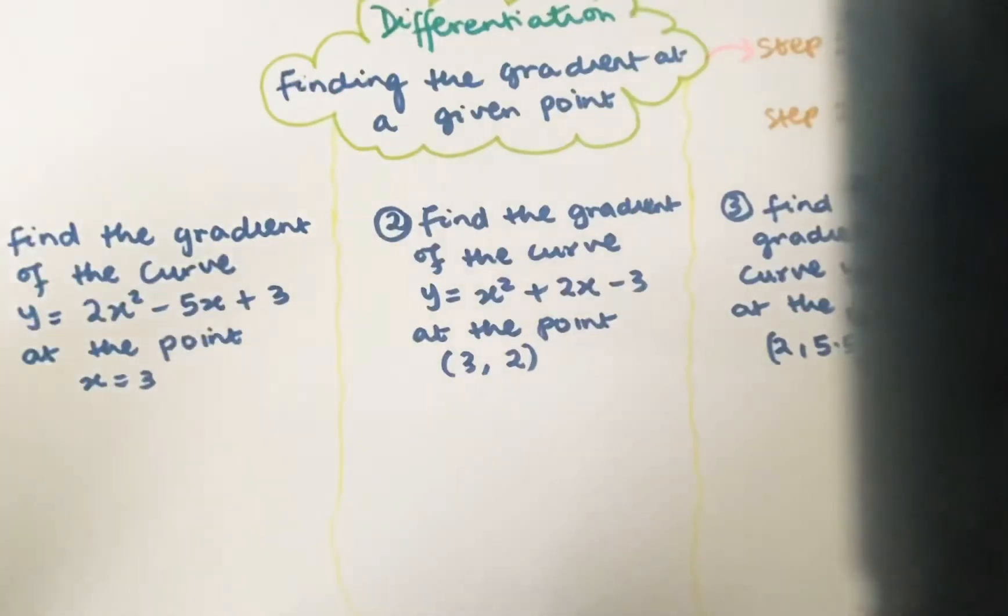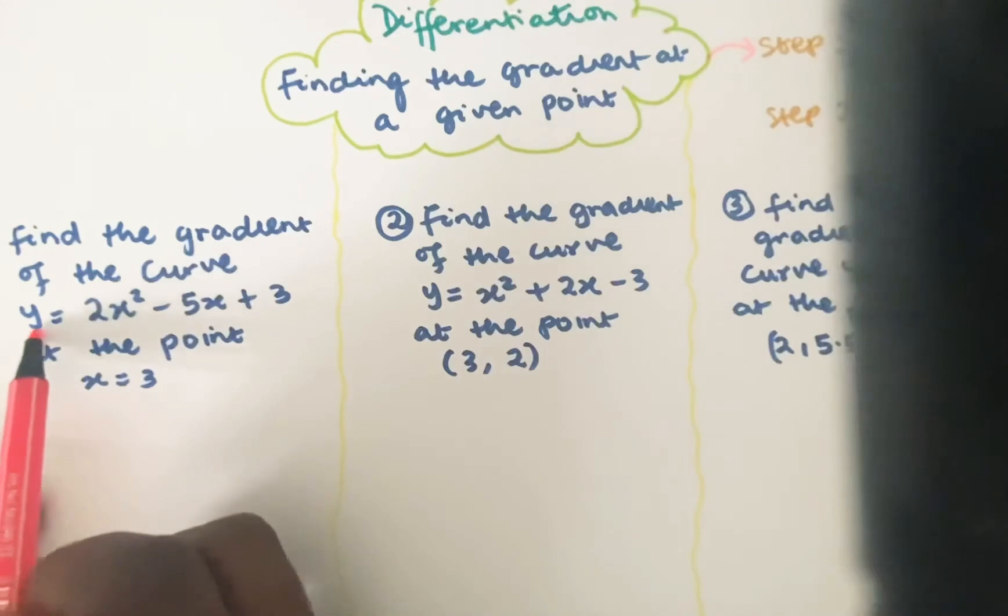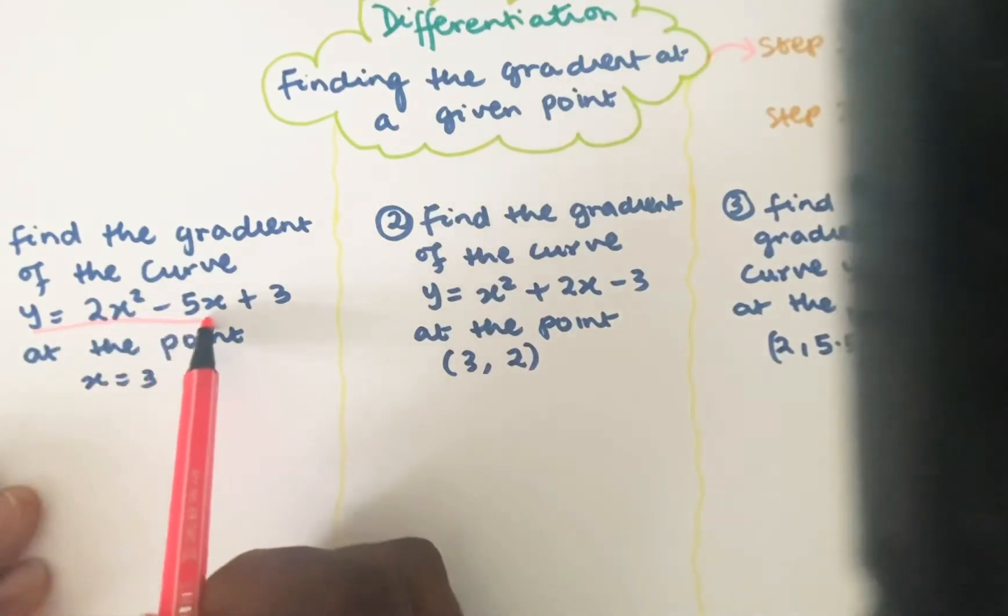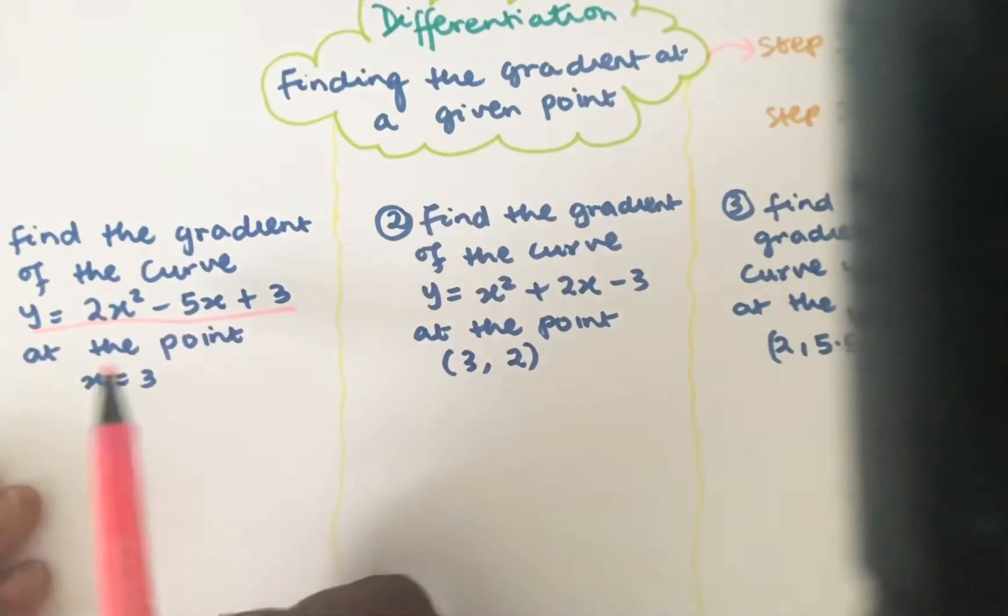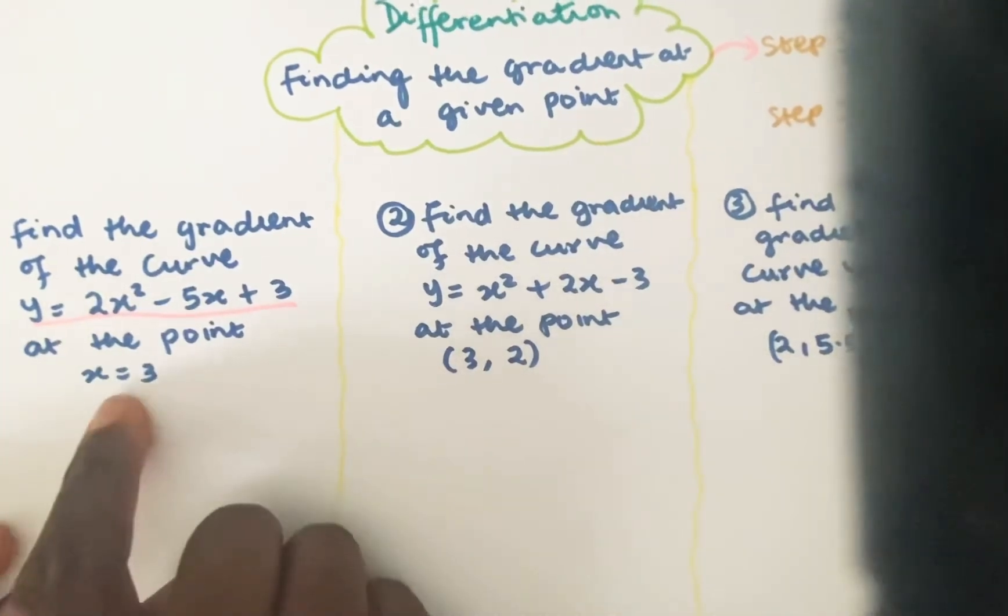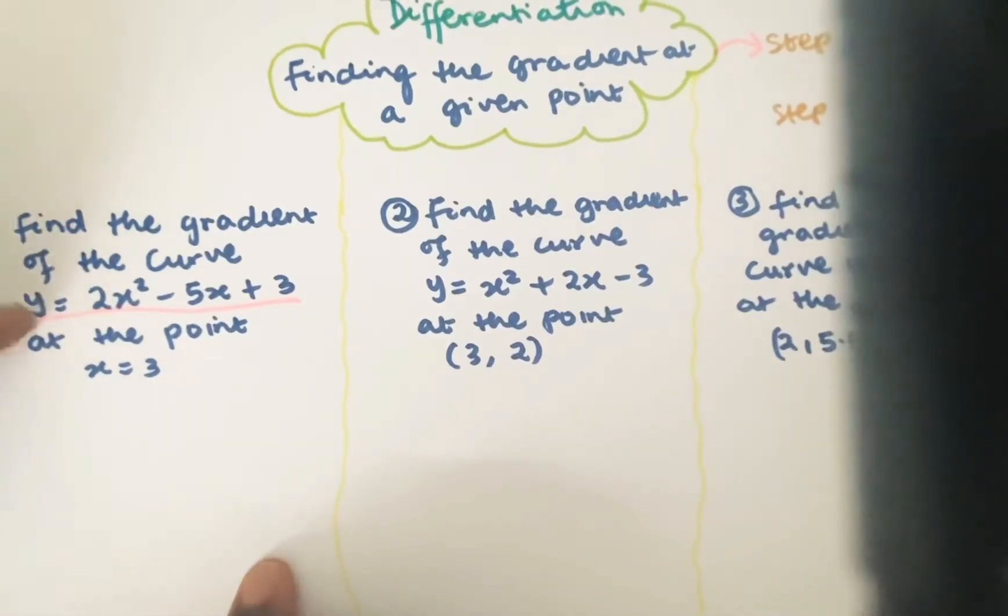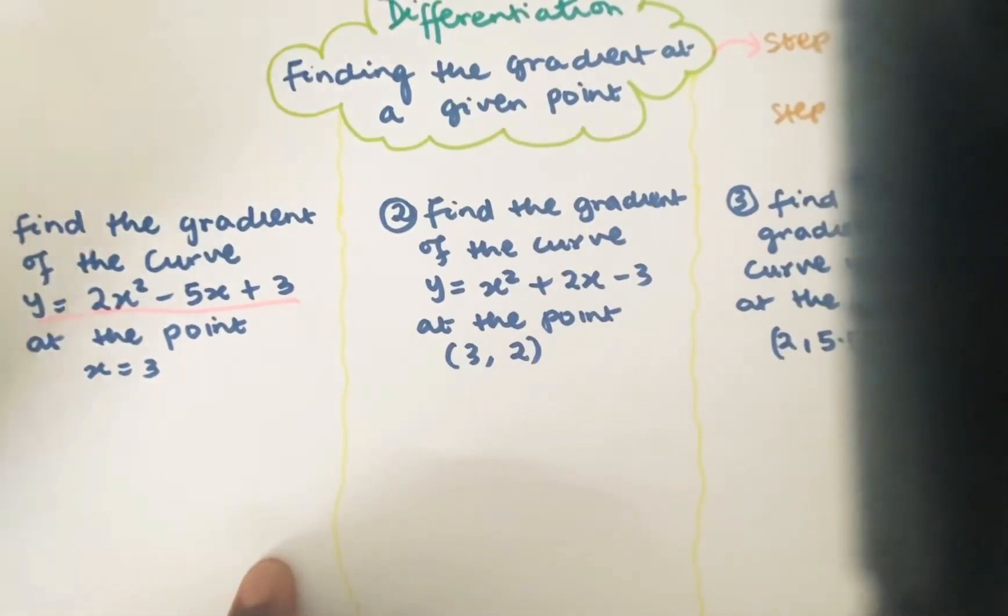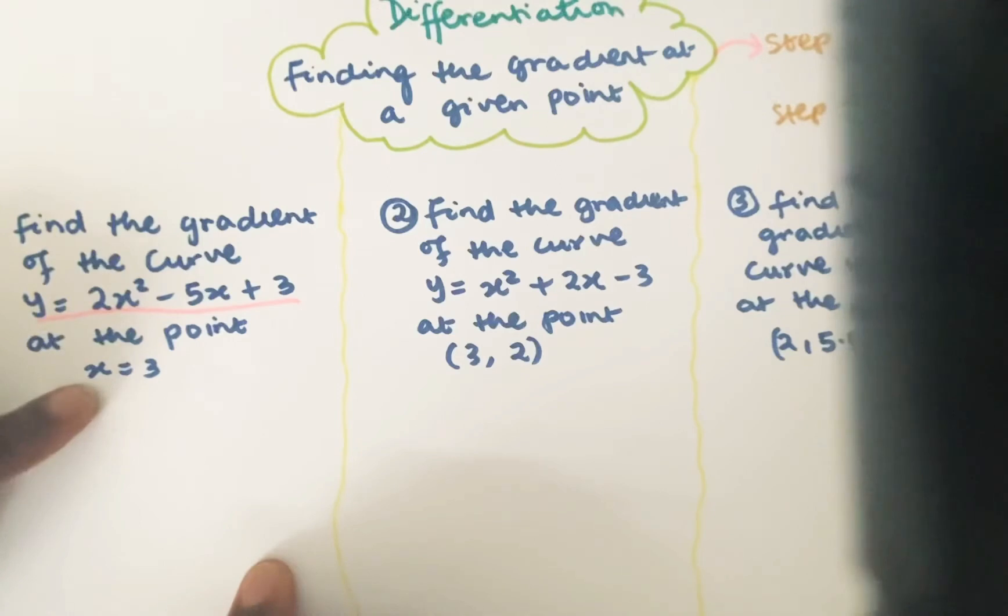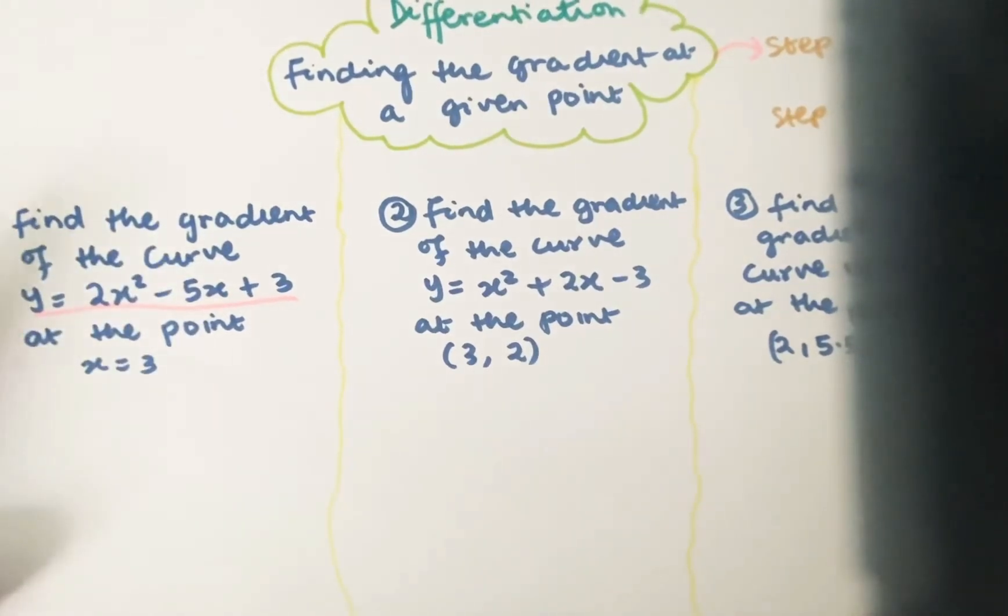So the first example here says, find the equation of the gradient of the curve y is equal to 2x squared minus 5x plus 3 at the point x is equal to 3. So that's the point it's given to you. And you need to first of all differentiate that function and then substitute when x is equal to 3. So let's do that.